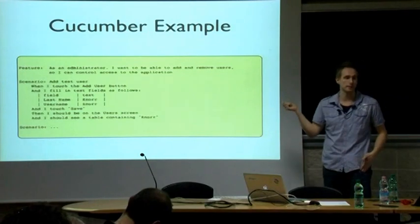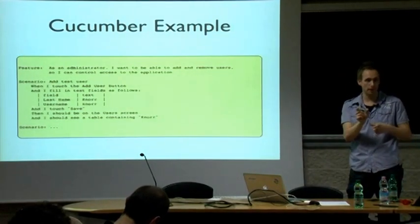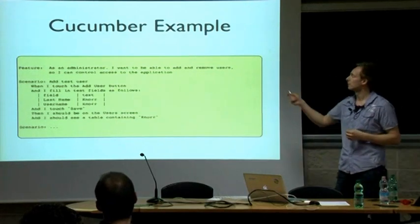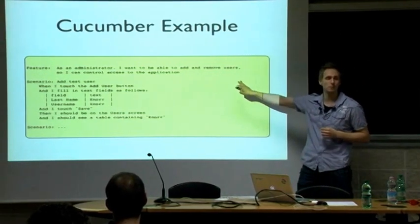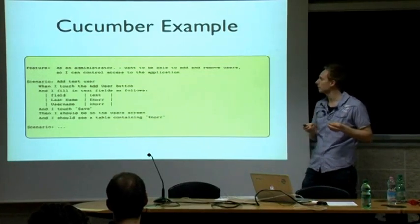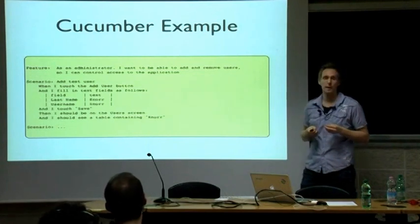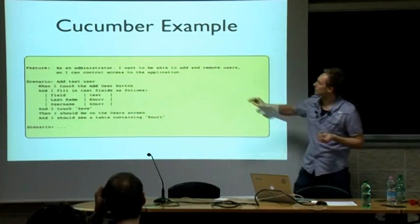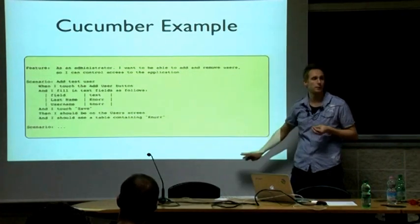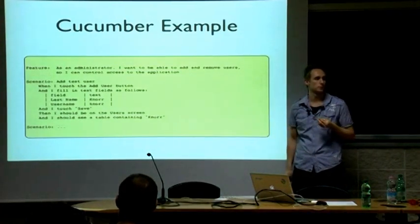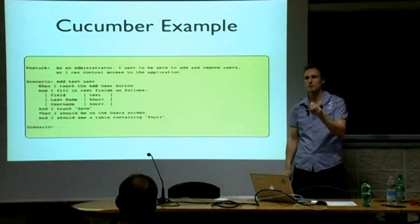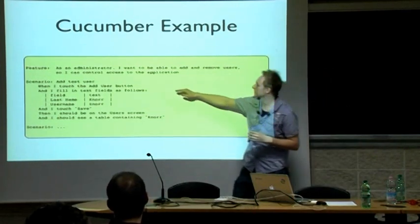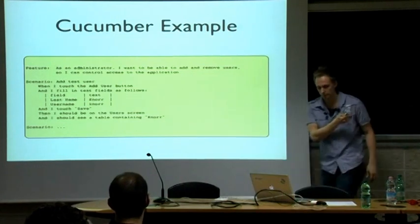What does a Cucumber test look like? A feature in Cucumber is a text file where you write down the feature — more or less the same as a feature in your application. The feature has a description, which is just text describing what it's about. For example: 'As an administrator, I want to be able to add and remove users so I can control access to the application.' A feature consists of a number of scenarios, and each scenario corresponds to a use case — everything going okay, or an error message scenario.